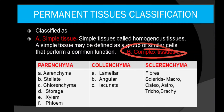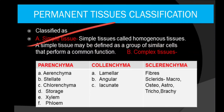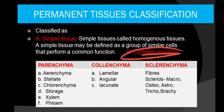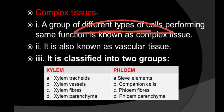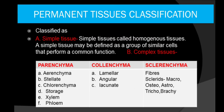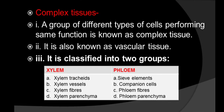We will focus on the complex tissues. As we know, simple tissues are divided into 3: parenchyma, collenchyma, and sclerenchyma. Complex tissues are a group of different types of cells performing the same function. Simple tissues are made up of a single type of cells, but complex tissues are made up of different types of cells.